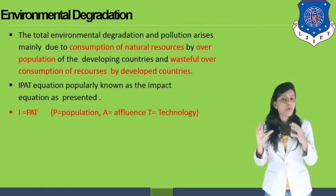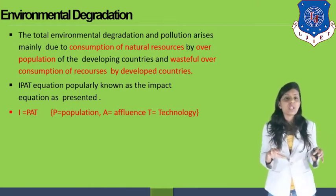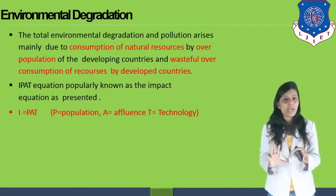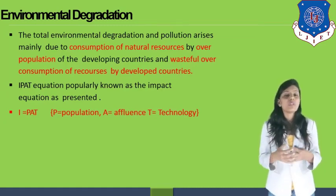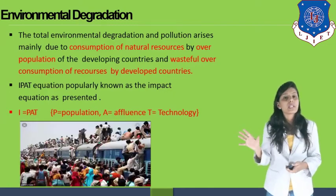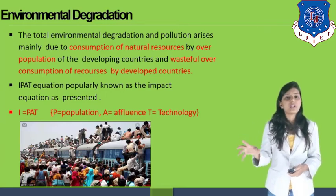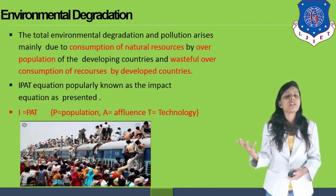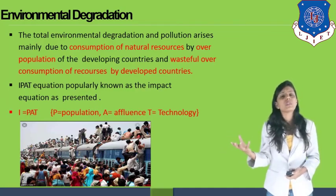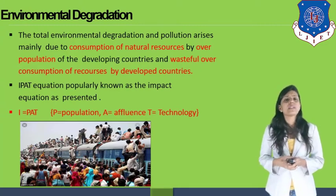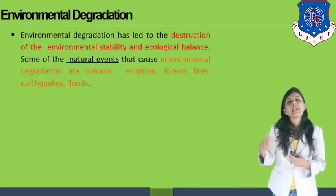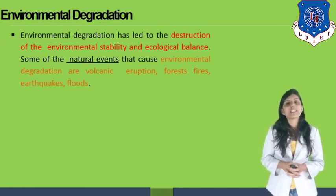The IPAT equation means that population, technology, and degradation of resources are combined to form an impact on the environment. That impact can be calculated based on how much population is living in a place, how much technology they are using, and how much resources are degraded by that population and technology. You can see how an overcrowded train represents population using technology and affecting the environment — running a train uses fossil fuels or coal, emitting CO2. As population increases day by day, the environment degrades more and more, leading to destruction of stability and ecological balance.